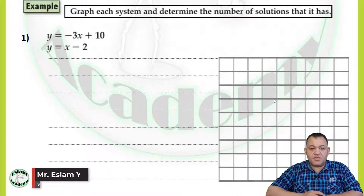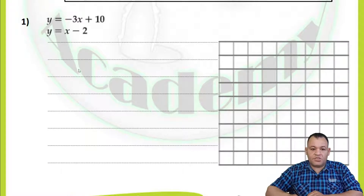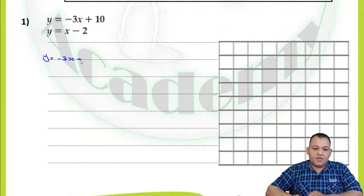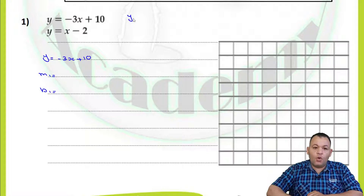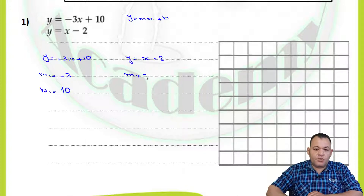In this question, we need to graph the system of equations and define the solution. The first equation is y equals negative 3x plus 10, and the second is y equals x minus 2. To graph each line, we need to find the slope m and the y-intercept, with the equation written in the form y equals mx plus b. For the first equation, the slope m1 equals negative 3 and the y-intercept equals 10. For the second equation, m2 equals 1 and the y-intercept equals negative 2.